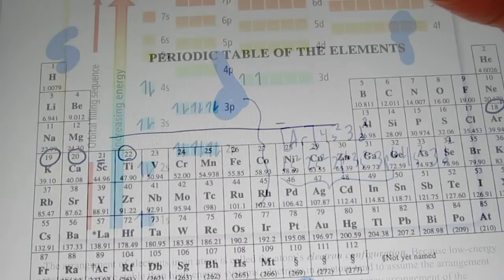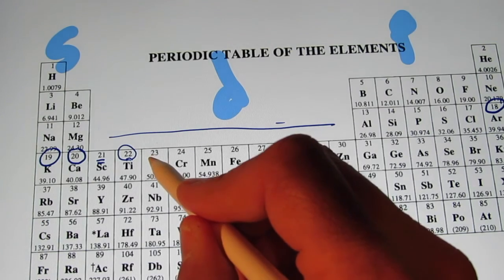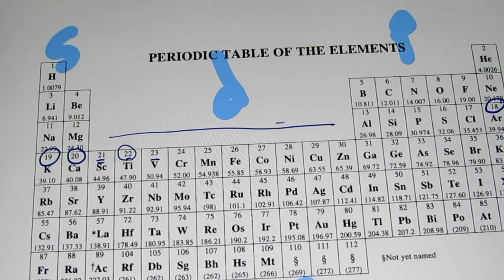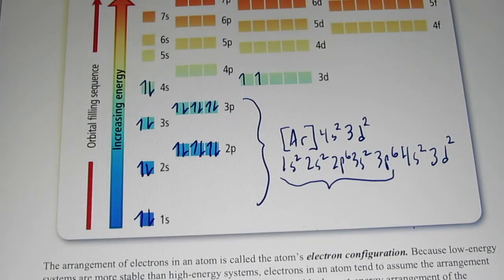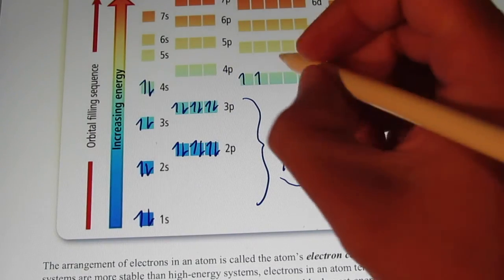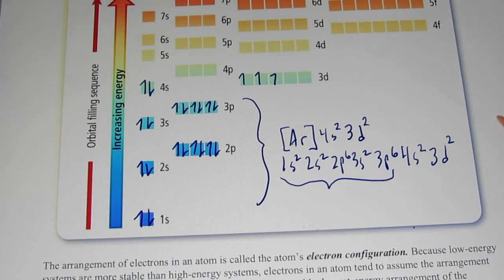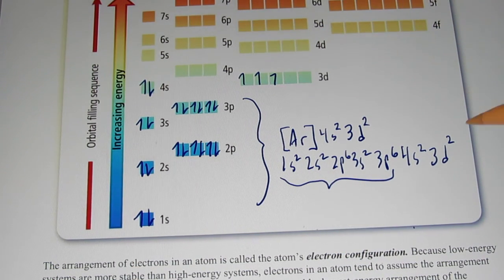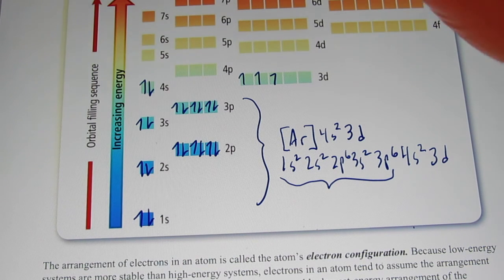The next element is vanadium with 23 electrons. That 23rd electron is going to go right there, and so its configuration would end with 3d3.